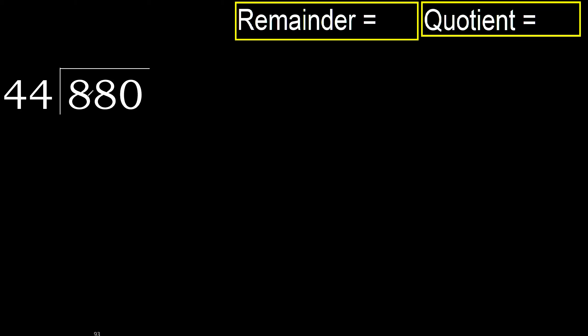880 divided by 44. 8 is less, therefore next. 88 is not less, therefore with 88. 44 multiplied by which number is nearest to 88 but not greater?